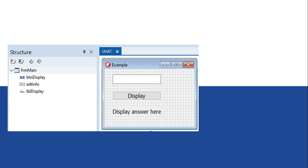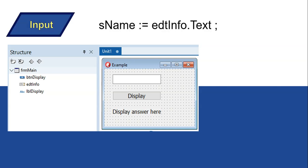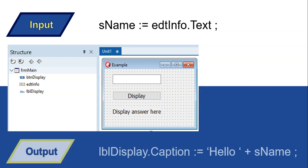It's a very simple program. All we're going to do is take a name variable, a string, and get the value of whatever name they put into that edit box EDT info dot text, and store it in sName. Then the output is simply to change the label's caption to say 'Hello' with a space followed by whatever's in the sName variable. Very simple program, nothing major.